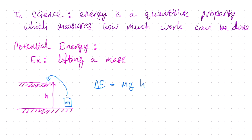Here mg is the force of gravity acting on the mass, where g is the acceleration due to gravity in Earth's field and h is the distance that the force acts over. So delta E, the energy I need, is force times distance, which is the amount of work I need to expend to lift up the mass against the force of gravity.